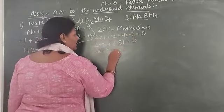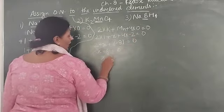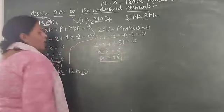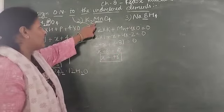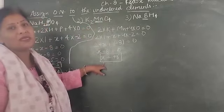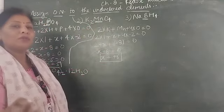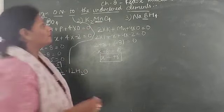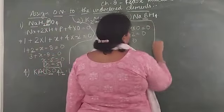X minus 6 equals 0, so X equals plus 6. Oxidation number of manganese in K2MnO4 is plus 6. The oxidation number is not always the same, it varies from compound to compound, students.